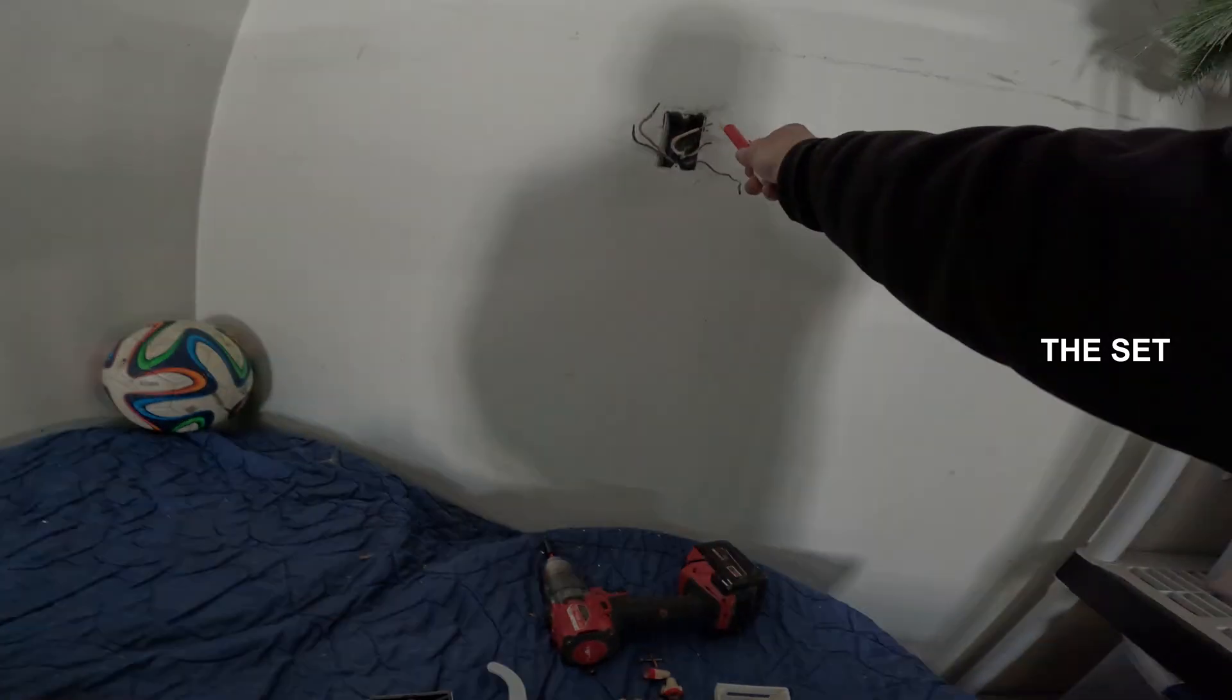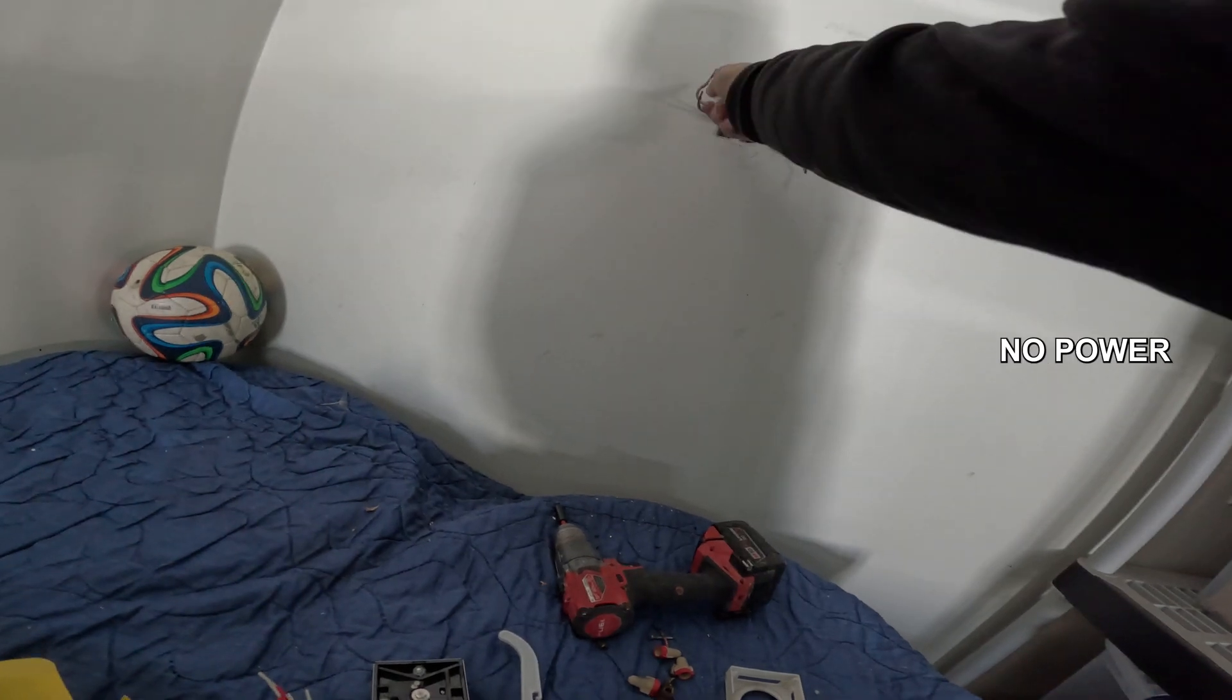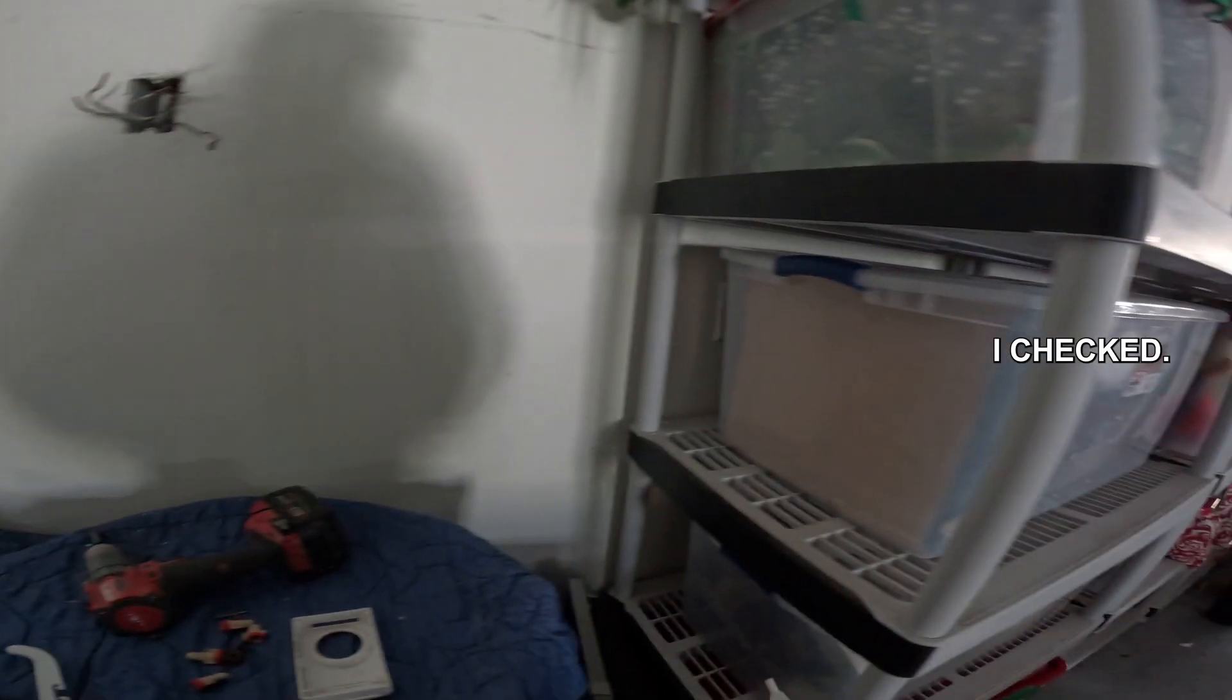And this will just tell me the set on my right is my line. This is my line. There's no power on that one so that's my load, which is just the opposite. It's a good thing I checked.